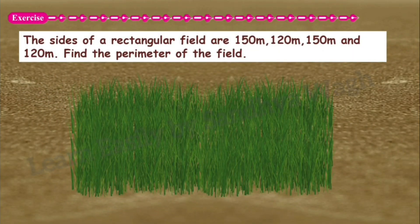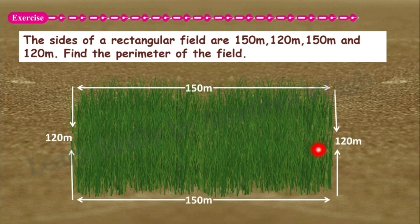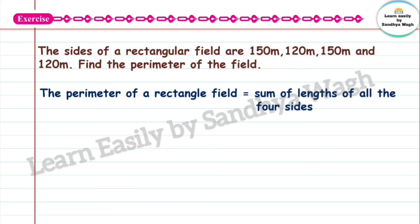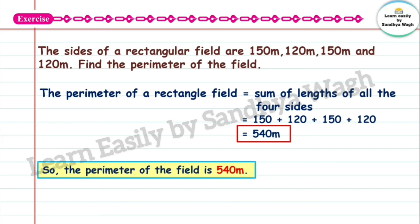The sides of a rectangular field are 150 metres, 120 metres, 150 metres, and 120 metres. So 150 plus 120 plus 150 plus 120 is equal to 540 metres. The perimeter of the field is 540 metres.